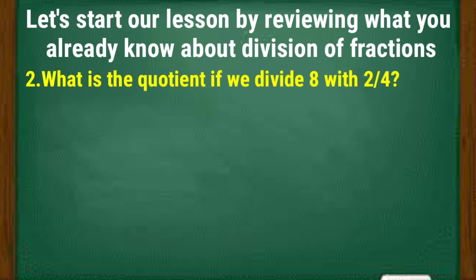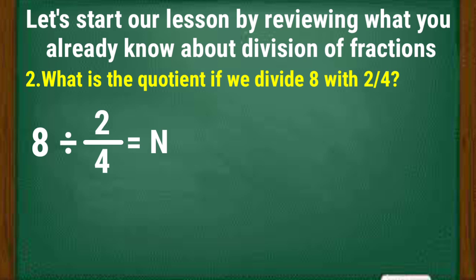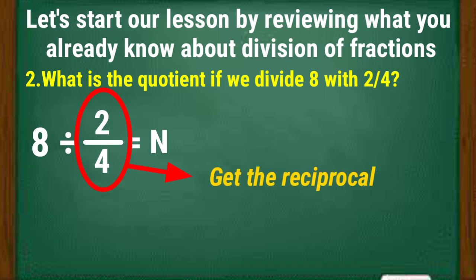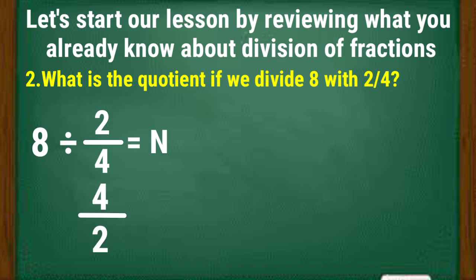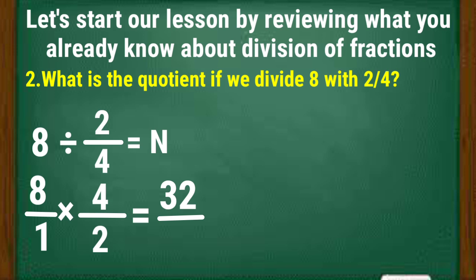Next: what is the quotient if we divide 8 by two-fourths? That is 8 divided by 2/4 equals N. Get the reciprocal of the divisor 2/4, which is 4/2. Proceed to multiplication: 8 times 4/2. Place the whole number 8 over 1, so that is 8/1 times 4/2. Multiply the numerators: 8 times 4 is 32. Multiply the denominators: 1 times 2 is 2. The answer is 32/2, which equals 16.